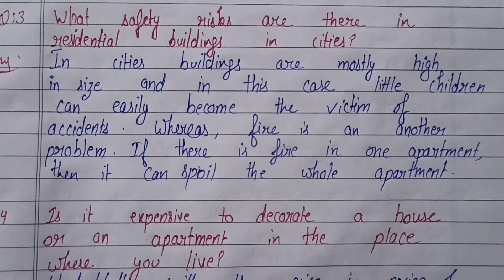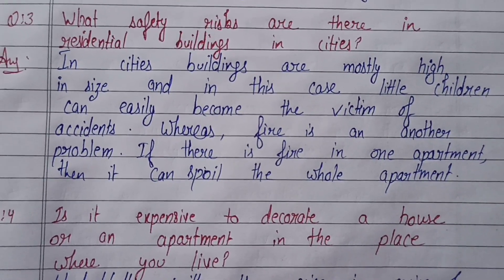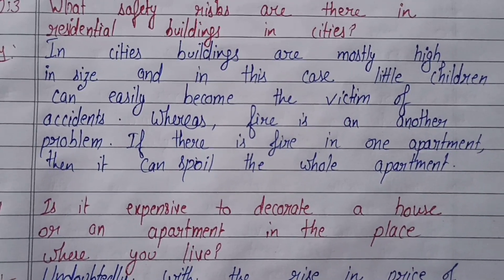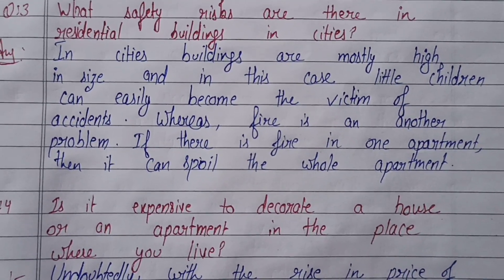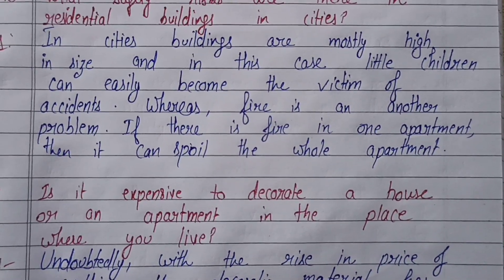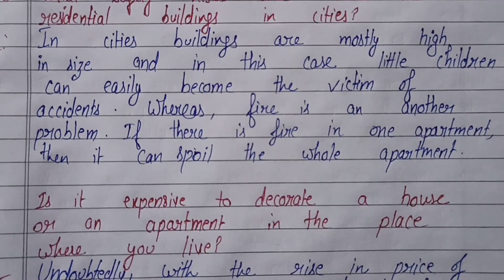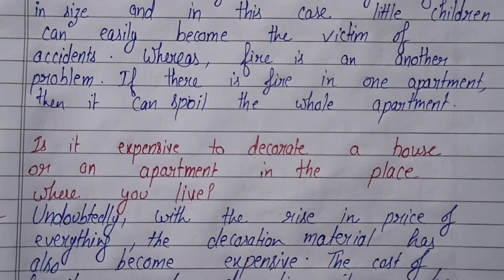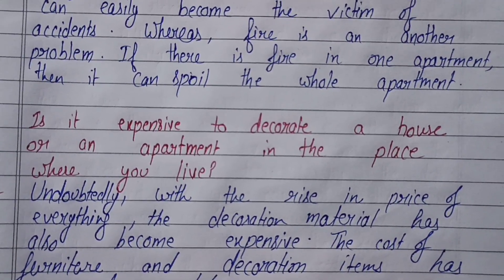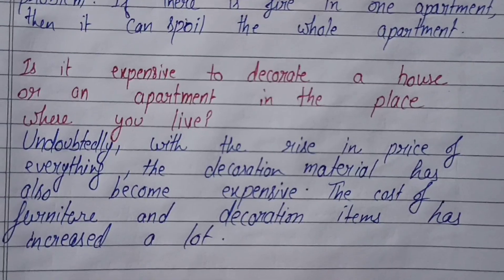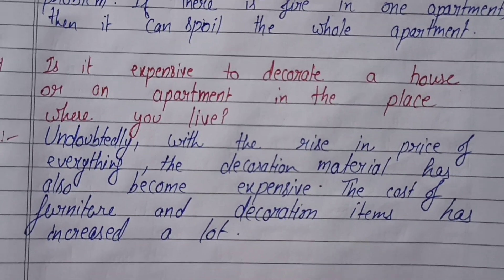The third follow-up question is: What safety risks are there in residential buildings in the cities? In cities, buildings are mostly high in size, and in this case little children can easily become the victim of accidents. Whereas fire is another problem — if there is fire in one apartment, then it can spoil the whole building.